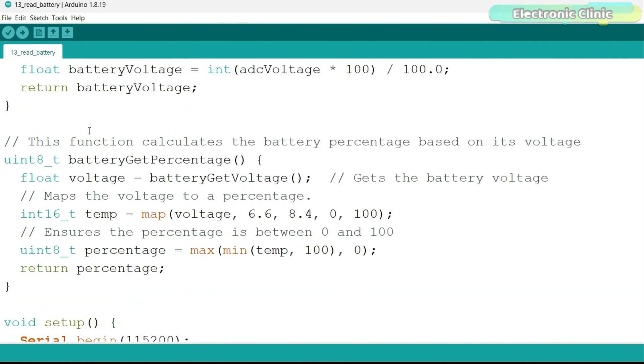We have another user defined function to calculate the battery percentage based on its voltage. First, we store the battery voltage in variable voltage. Next, we map the voltage to a percentage and store it in the variable temp.